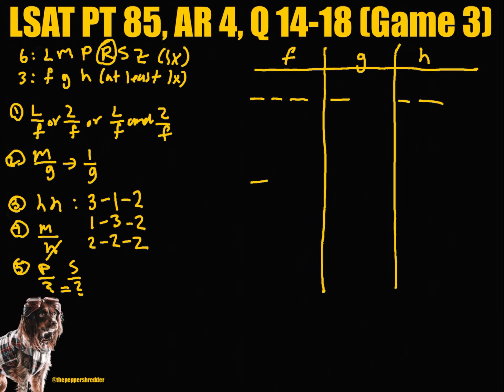Knowing the numerical distribution, we can split the game board using the most restrictive rules which are rules 1 and 5. In the first instance we can have P and S grouped with F, and one of either L or Z in the third spot for F. Then M must be grouped with G to comply with rule 4. Then R and either Z or L must also be grouped with H.